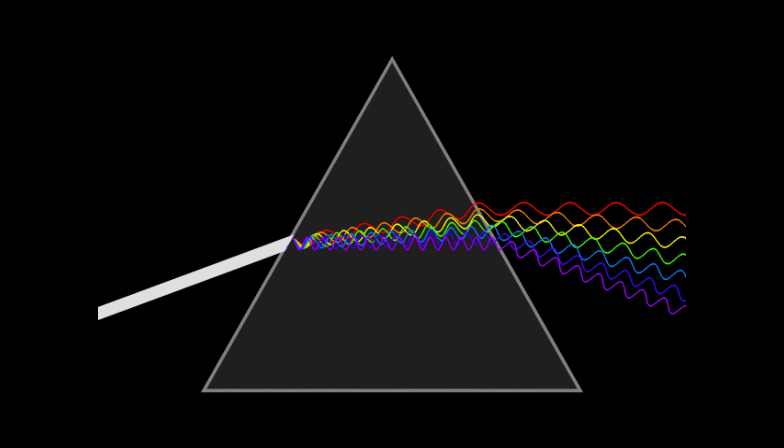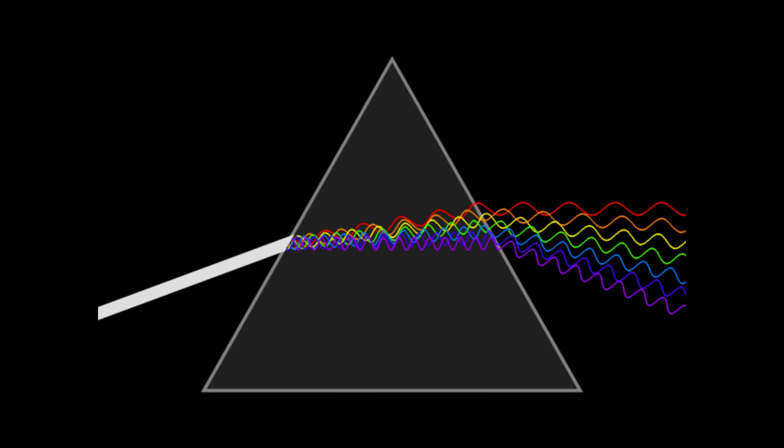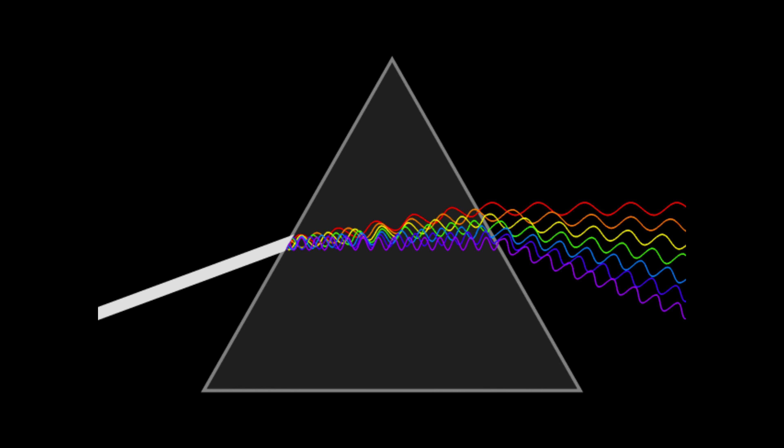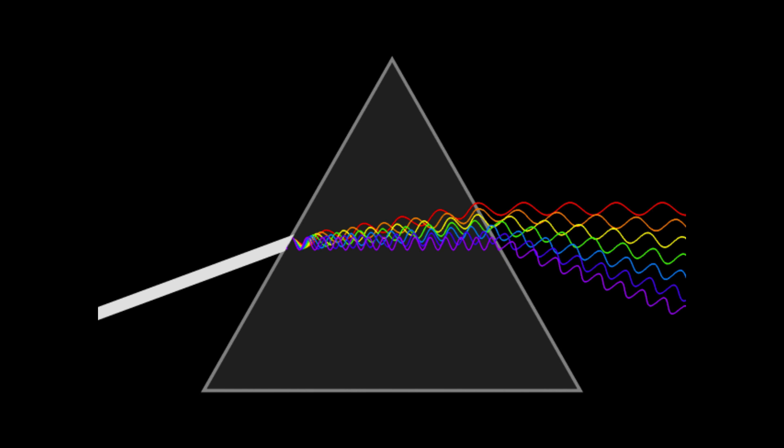This occurs because the velocity of light decreases slightly as it enters the prism, causing it to bend. This bending of light is known as refraction.